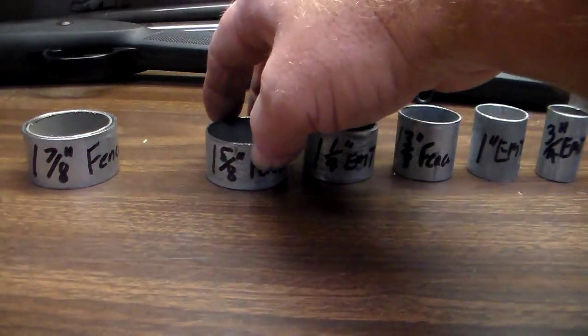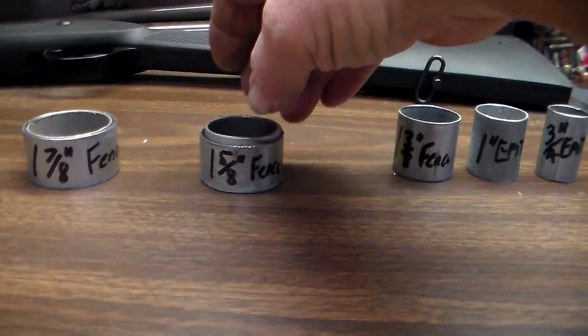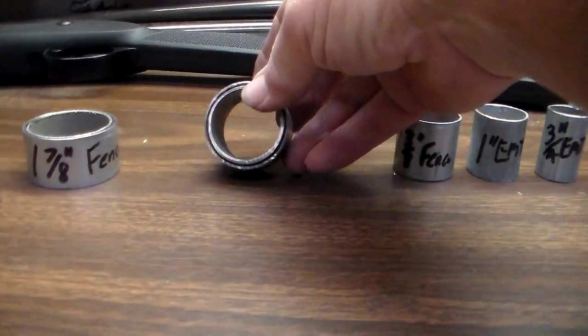The next would be the inch and five-eighths. And the inch and a quarter fits inside the inch and five-eighths. And it fits pretty good too. It's not bad.